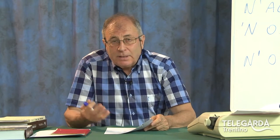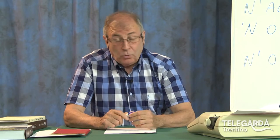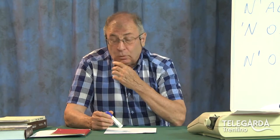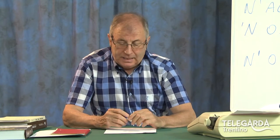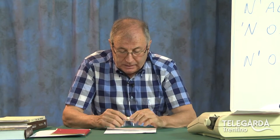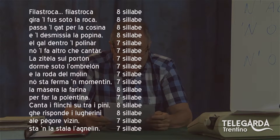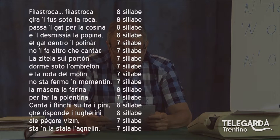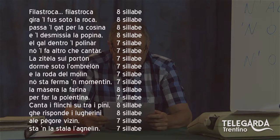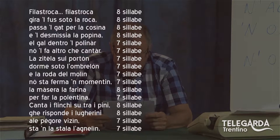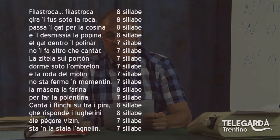Per aiutarvi a seguirmi in questa disquisizione grammaticale, che spero non sia noiosa ma importante per chi vuole scrivere in dialetto — ma anche in italiano — voi vedrete in sovraimpressione una filastrocca in dialetto, perché mi permette appunto di spiegarvi questa metrica. Filastrocca, filastrocca, gira il fus sotto la rocca, passa il gat per la cosina e il desmissi alla popina, e il gal dentro il polinar non fa altro che cantar, la zitela sul porton dorme sotto l'ombrelon, e via avanti.